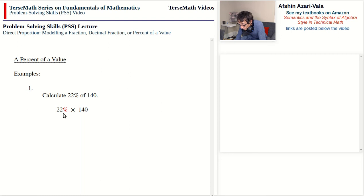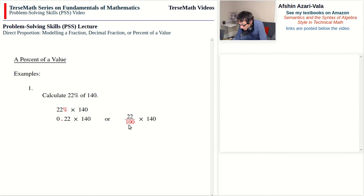We have a choice when working out 22% of 140: change the percentage to a decimal or to a fraction. Which you pick depends on context — formal notation uses the fraction form (22/100), while applications of theory use decimals, where division by 100 is carried out by moving the decimal point back two digits to get 0.22. In either case, we get 30.8.